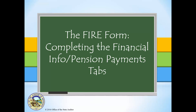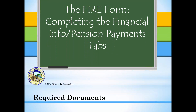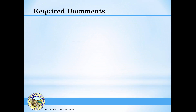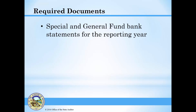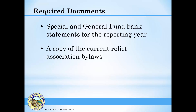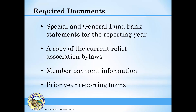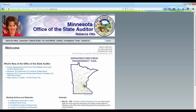Before we can begin completing the form, you'll need to gather some materials. First, you will need bank statements for the Special and General Funds for the Reporting Year. Next, you will need a copy of your current Relief Association Bylaws. If you paid out a service pension or benefit during the year, you will need the payment information. And finally, you will need a copy of the Prior Year Reporting Forms to use as a reference guide. You can obtain a copy of the Fire Form on the OSA website using the State Auditor Form Entry System, or SAFES, which is found under the Forms menu option.